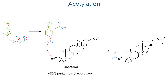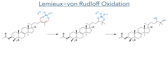The synthesis starts with the acetylation of lanosterol, which is a steroid compound obtained from sheep's wool. DMAP first reacts with acetic anhydride, forming a more reactive acetylating agent, which then reacts with a hydroxyl group. The product was taken forward without purification and was subject to Lemieux-von Rudolf oxidation.